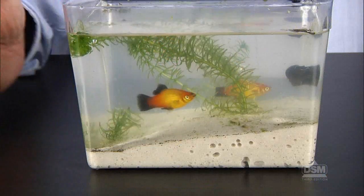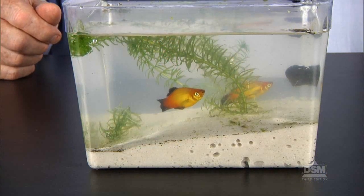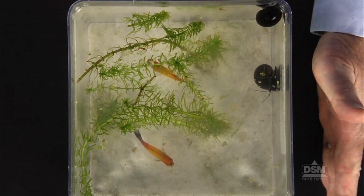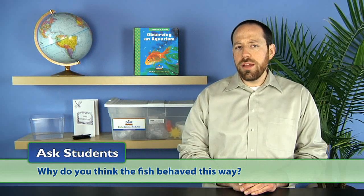Next, have students place their hands on one side of the aquarium. Again, the fish should dart in the opposite direction from the hands and possibly take cover in the plants. Ask students, why do you think the fish behaved this way? Students may guess that the fish saw a large object moving toward them and it scared them.